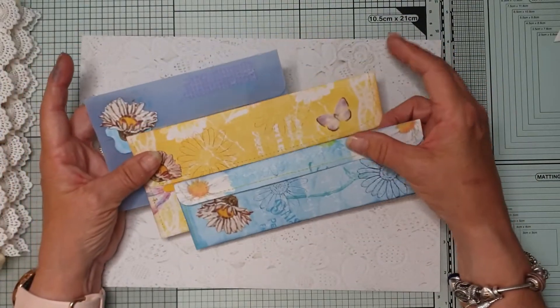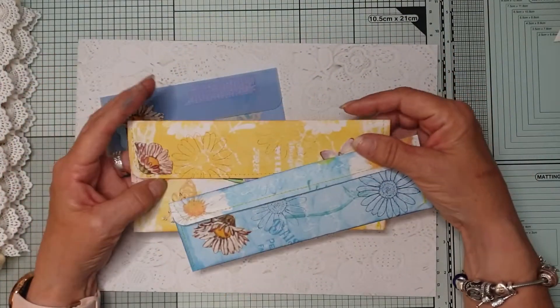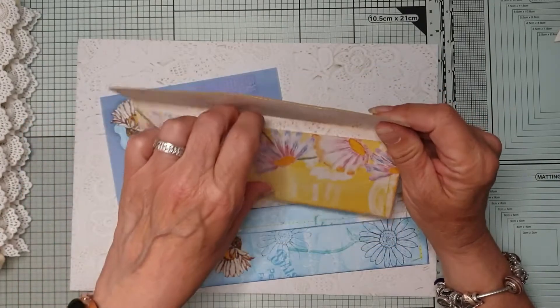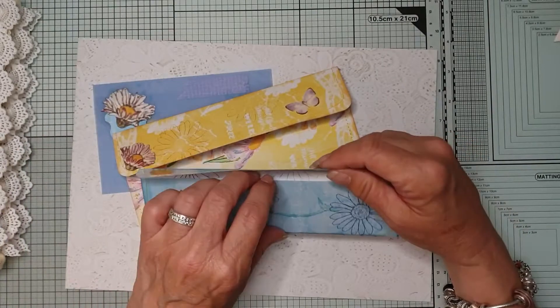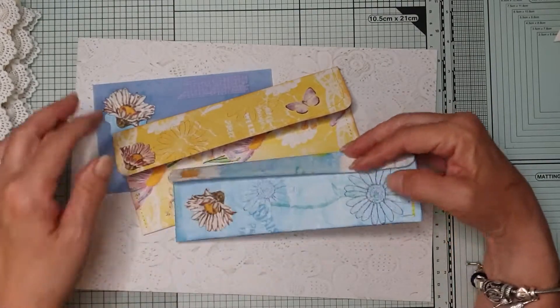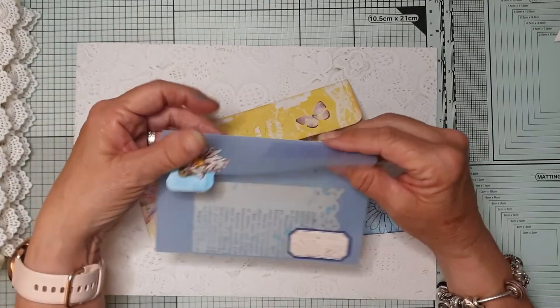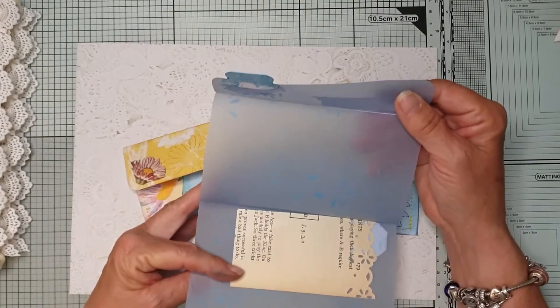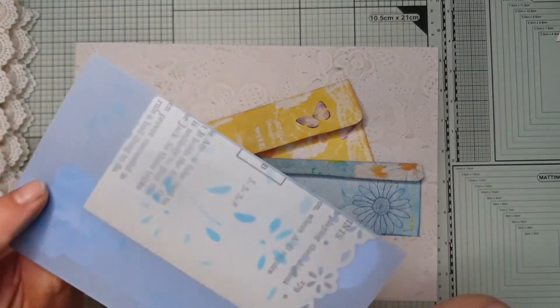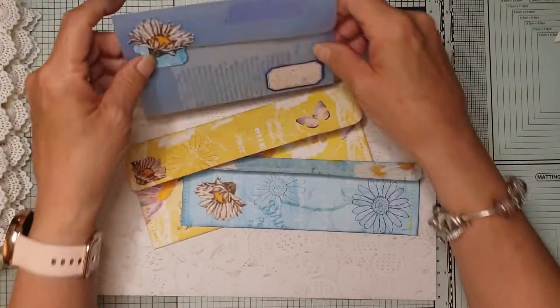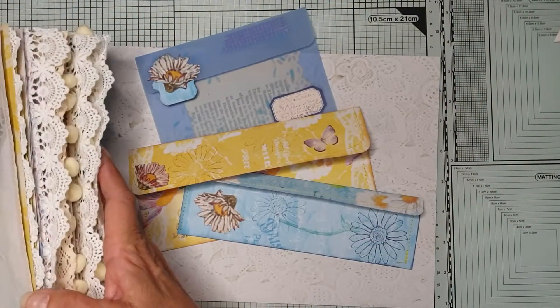So we're just making some long pockets, nothing special, it's just out of some of the digital paper. I have actually stitched them, that's a little narrow one and that's a vellum one, I didn't stitch that, I just left it open.